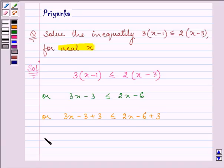After simplification, we have 3x ≤ 2x - 3.